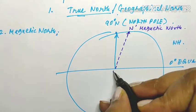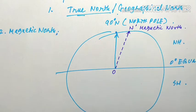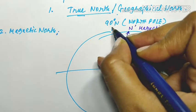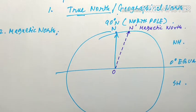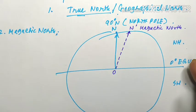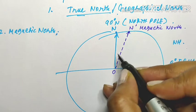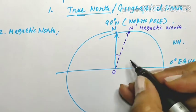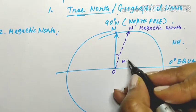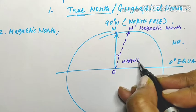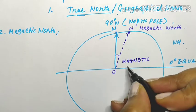If this is point O and this is point N, the angle that is formed is known as magnetic declination.